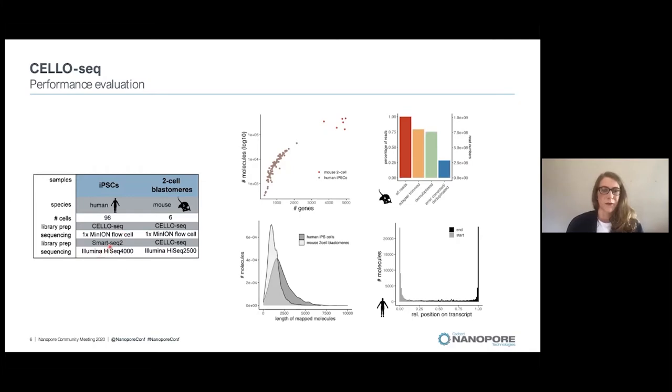Here's the performance of the long read data. If we have 100 cells loaded on a Minion flow cell, we can evaluate 1,000 genes with around 10,000 reads. If we loaded six cells on a Minion flow cell, we caught 5,000 genes with around 200,000 reads.